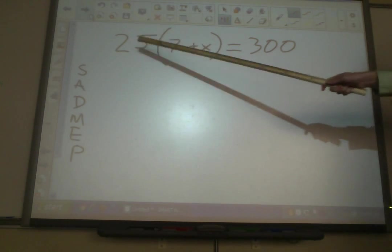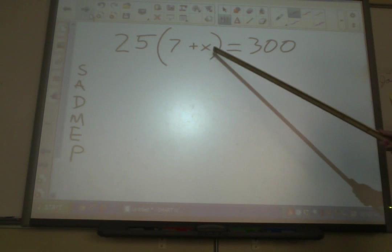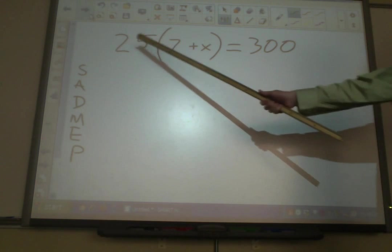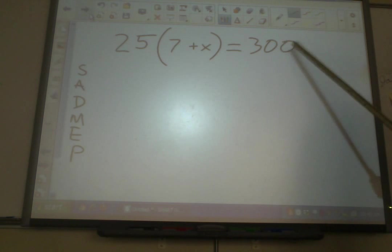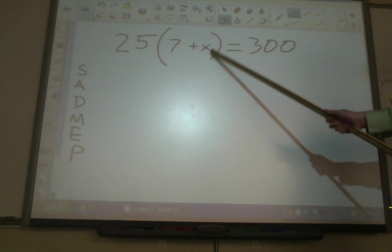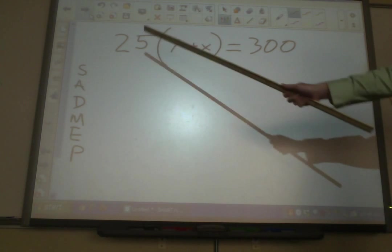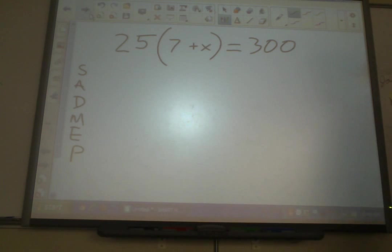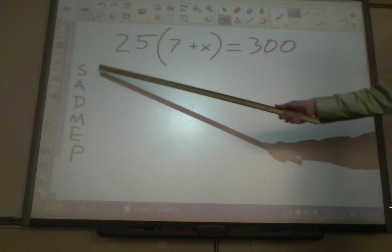We're going to start here. We've got 25 times the quantity of 7 plus x equals 300. Let's check. Can we combine like terms? No, nothing over here. No, nothing over here. Get it down to one variable. Already done. We just have this one x. No other x is anywhere up here. So we need to use reverse PEMDAS, or as we like to say, SADMEP, right?